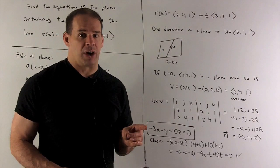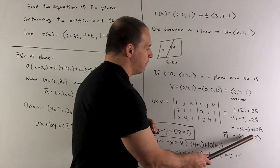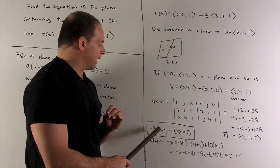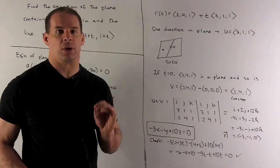That's my normal vector N. So this is going to be a, b, and c. And I get my plane here: minus 3x, minus y, plus 10z equals 0.